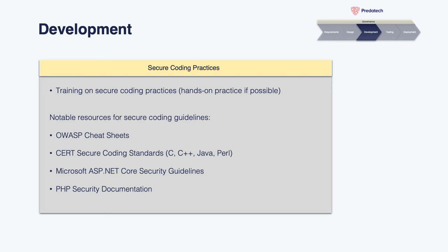Once you've chosen your technologies and are tracking your dependencies, how do you write secure code? Hands-on training is always golden for understanding and writing secure code, but there are also a number of resources online for your chosen language. OWASP Cheat Sheets is a great resource for detailed guidelines on implementing functionality securely. You can also look at the CERT Secure Coding Standards when working with C, C++, Java, and Perl. Microsoft ASP.NET Core Security Guidelines is a great resource for Microsoft Stack, and PHP's own security documentation is a great place to start when working with PHP.